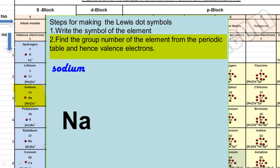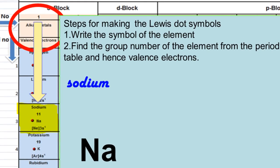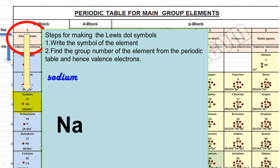Next step is find out the group number of this element with the help of periodic table. As you can see, Na is in group number one, so its valence electron is also one.